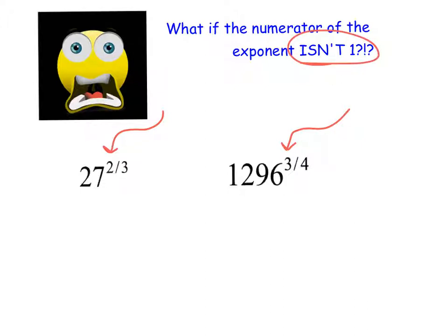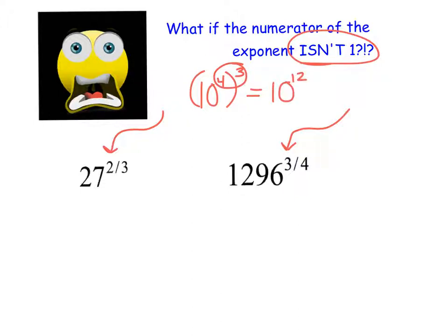What I always like to start doing is rewriting these very strategically. What I want to remind you of is the powers-to-powers rule. You already know that if you have something like 10 to the power of 4 to the power of 3, you can multiply your two exponents together, and that will become 10 to the power of 12. Those are, in essence, the exact same thing.